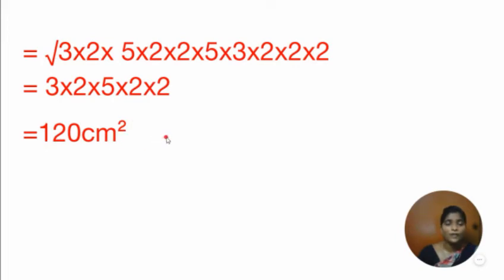To find the area of a triangle using Heron's formula: apply the formula root of S into (S minus A) into (S minus B) into (S minus C). First find the semi-perimeter S using S equals A plus B plus C divided by 2, then substitute all values to get the area.